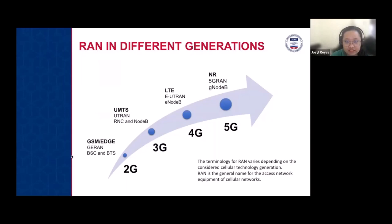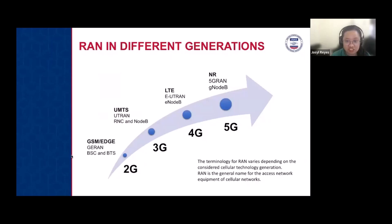In LTE or 4G, we have EUTRAN — the evolved UTRAN — and the base station is called E-NodeB. For 5G, we have 5G RAN using G-NodeB, where NR stands for New Radio. The terminologies for radio access networks vary depending on the cellular technology. Essentially, RAN is the general name for access network equipment of cellular networks.